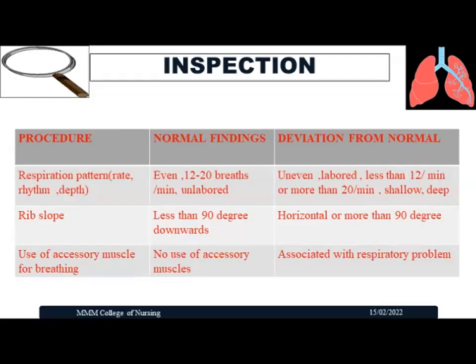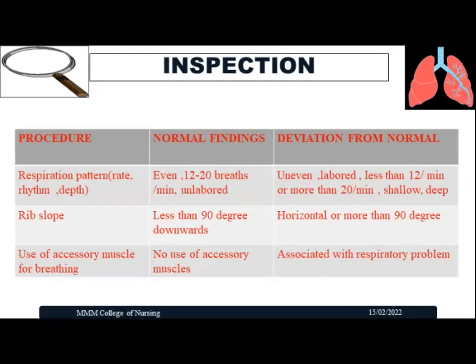Next, assess the respiratory pattern: rate, rhythm, and depth of respiration. The normal respiratory rate is 12 to 20 breaths per minute with easy, unlabored breathing. Abnormal findings include uneven or labored breathing, dyspnea, or a respiratory rate either less than 12 or more than 20 breaths per minute. Look for tachypnea, bradypnea, hyperventilation, hypoventilation, Cheyne-Stokes respiration, or Biot's respiration by observing the rate, rhythm, and depth.